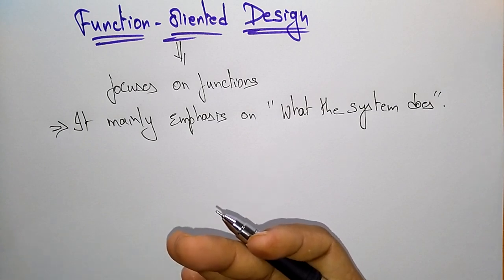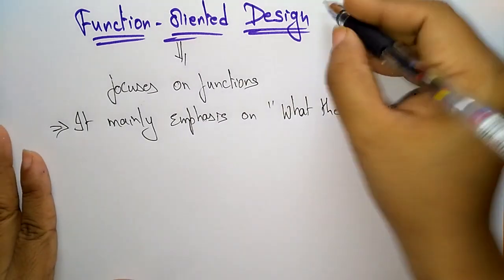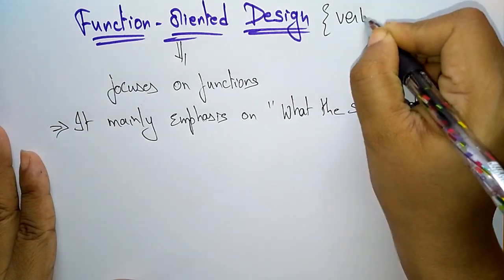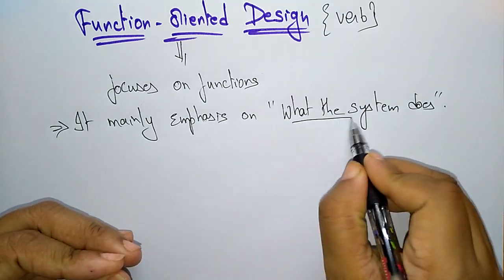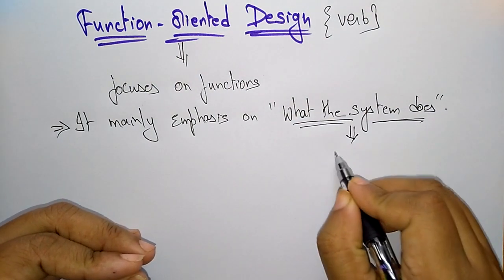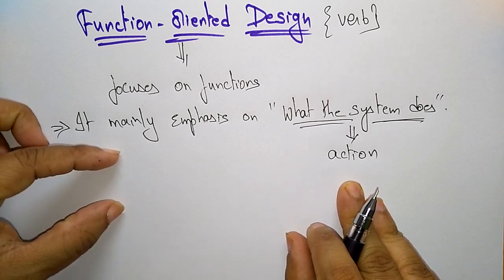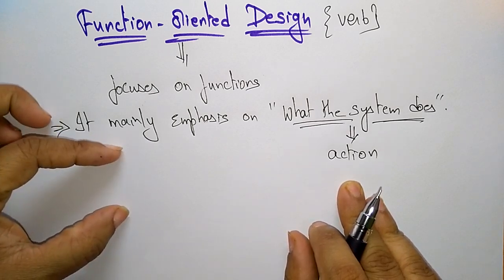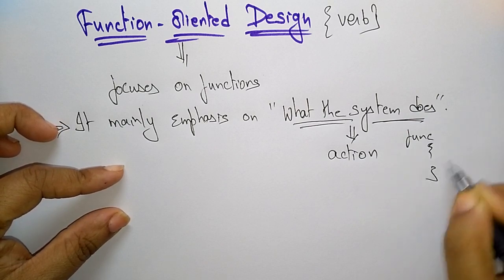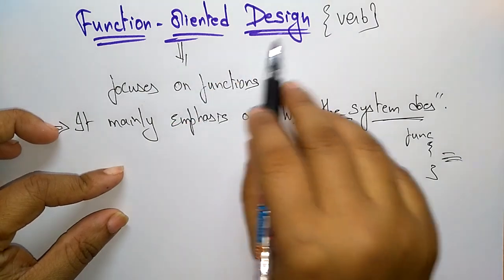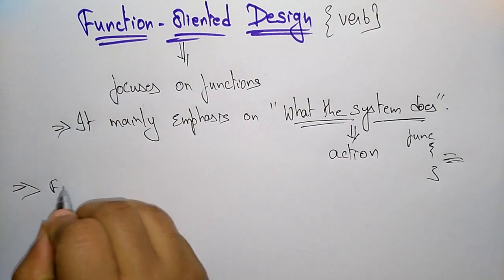So a function is nothing but it emphasizes on what the system does. We call function oriented design a 'verb' — because it focuses on action. It tells about the action that is going to be performed. Whatever coding is there, that coding will be included in a function. So that's what we call function oriented design — the concept of a verb.